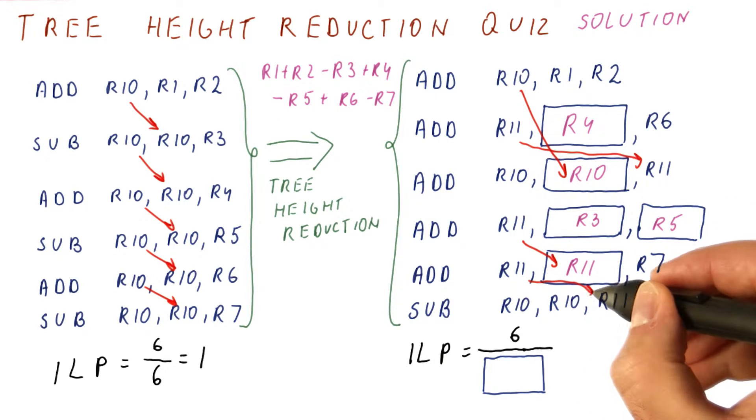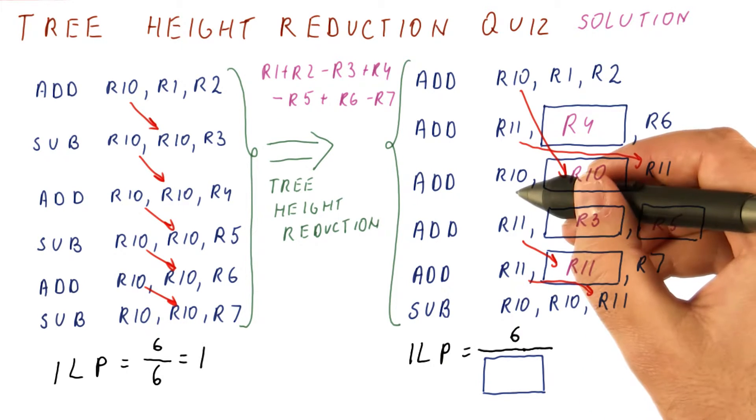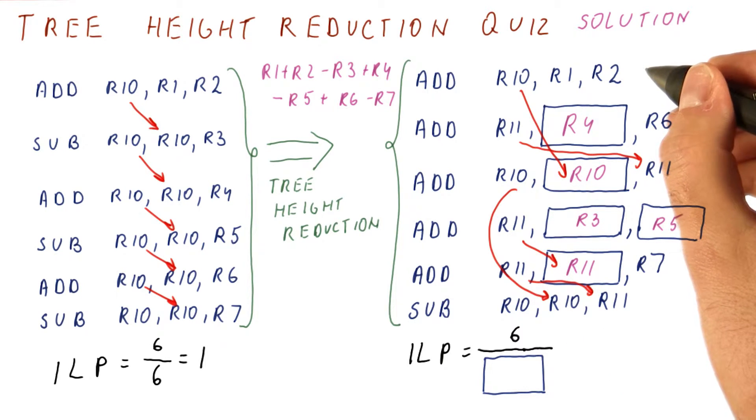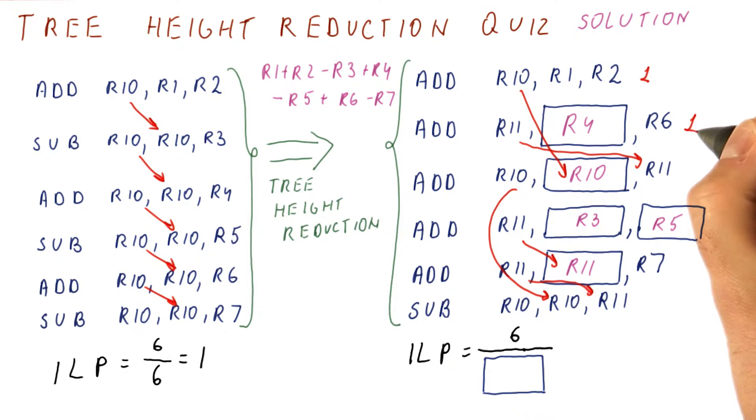And then finally, there is a dependence here. And also, our final R10 here needs to be brought this way. So if you look at what can be done in the first cycle, this can be done in the first cycle, and so can this.